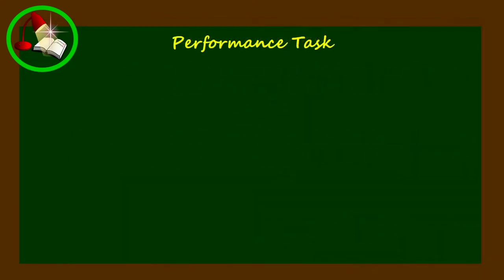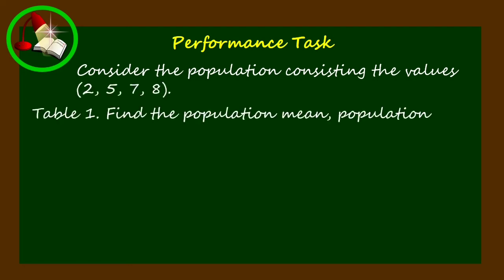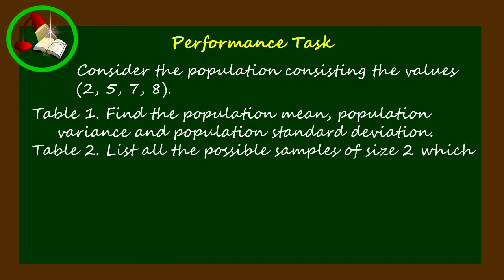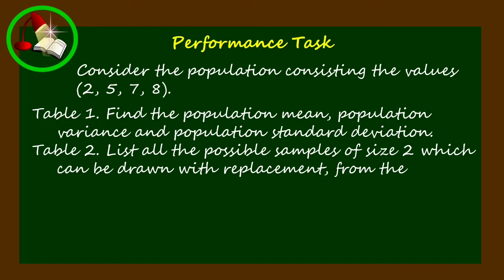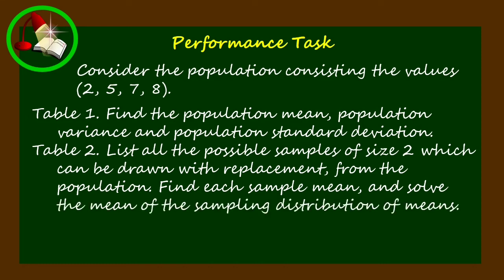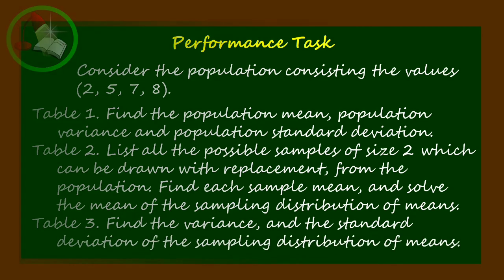For your performance task, consider the population consisting of the values 2, 5, 7, and 8. Construct Table 1 to find the population mean, population variance, and population standard deviation. Construct Table 2 to list all possible samples of size 2 that can be drawn with replacement from the population, find each sample mean, and solve for the mean of the sampling distribution of means. Construct Table 3 to find the variance and the standard deviation of the sampling distribution of means.